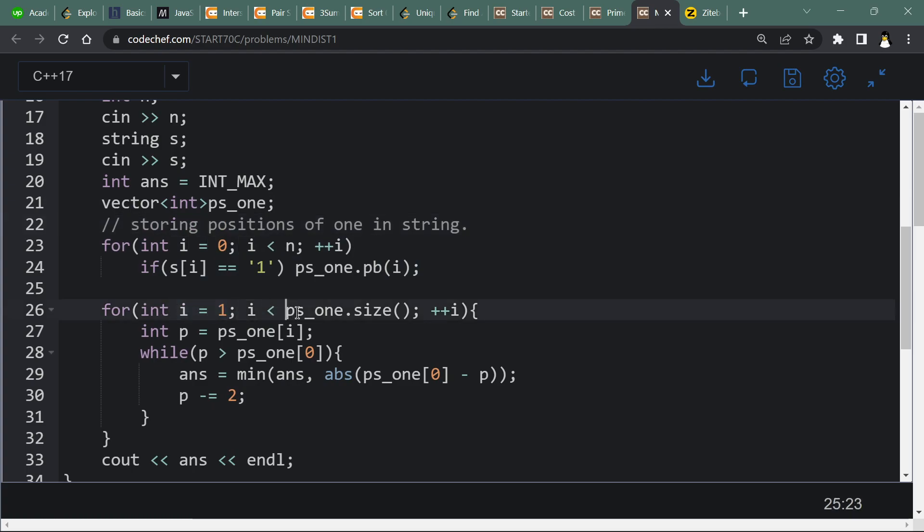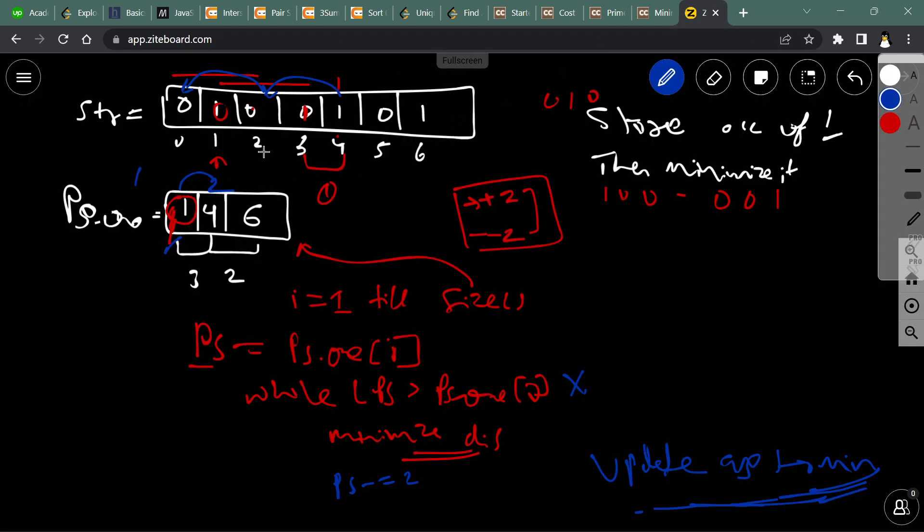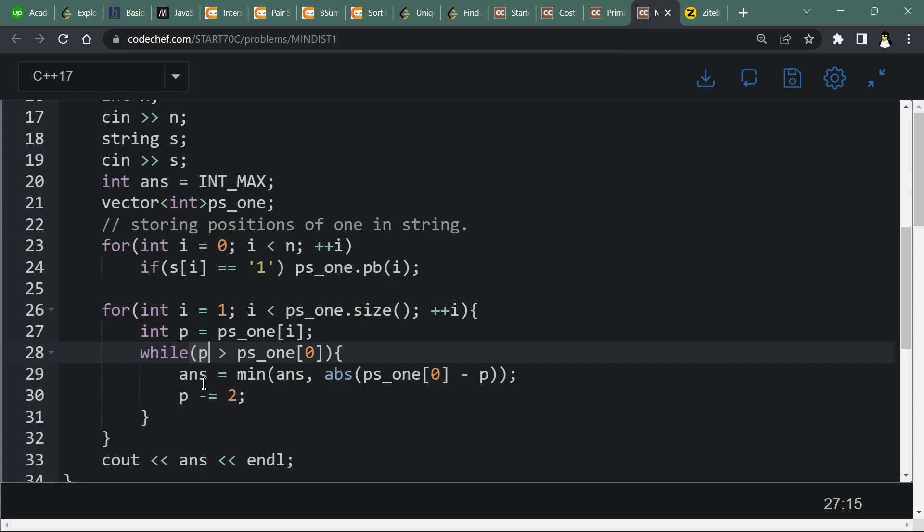Again starting with i equal to 1 to ps1.size and implementing it. This is our position element. While p is greater than the first element, I described here, this one, I am changing the value of answer to minimum of answer.